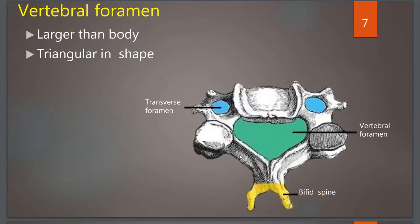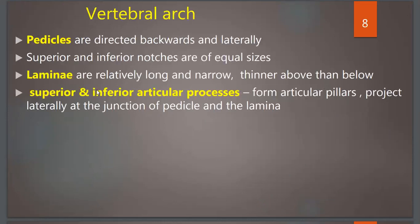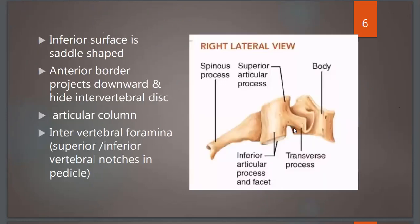The right and left laminae are identified here. Laminae are actually fusing to form the spinous process which is bifid. Laminae are relatively long and narrow, thinner above than below. The superior articular process will articulate with the inferior articular process of the vertebra above, hence forming intervertebral joints.